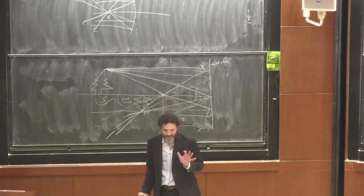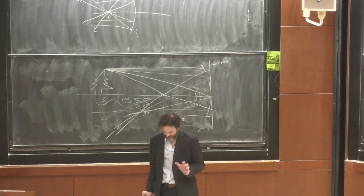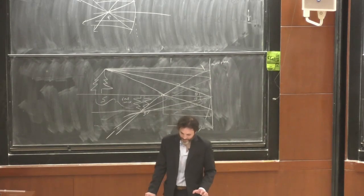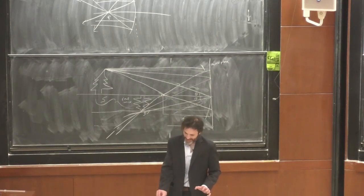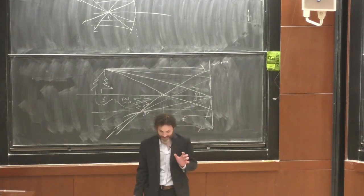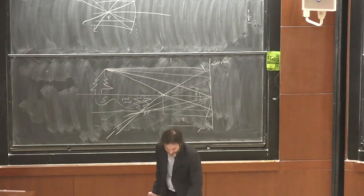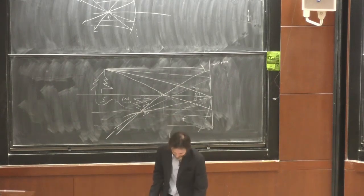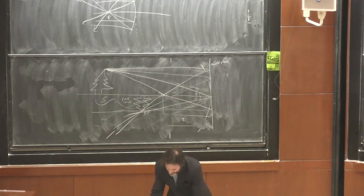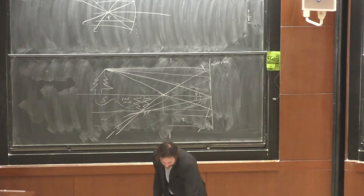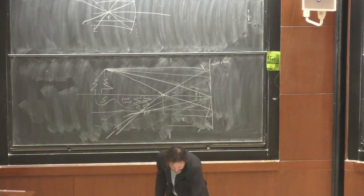These three rays also locate the image when S is less than F, but in that case the image is virtual and behind the mirror. Why don't the slides show a picture of that? Let me find one and draw it out to show what it looks like when it's imaginary and behind the mirror.